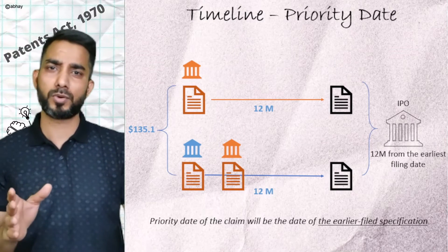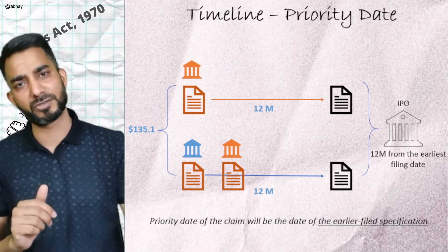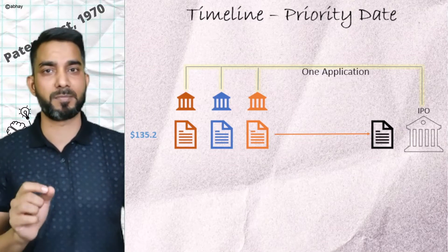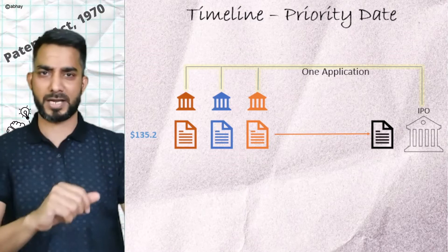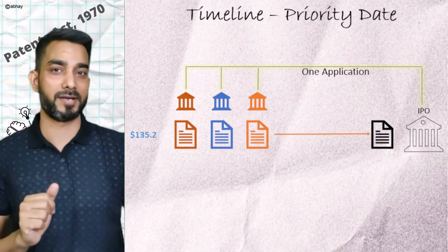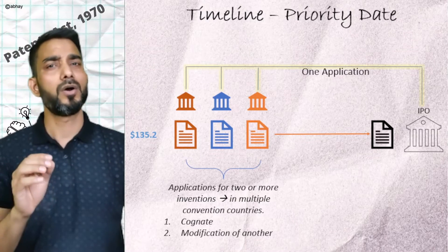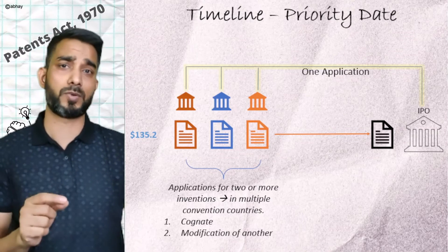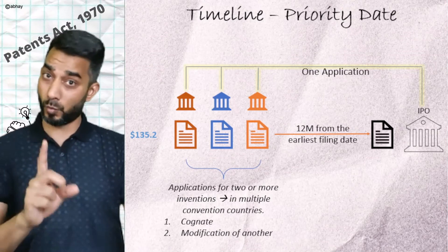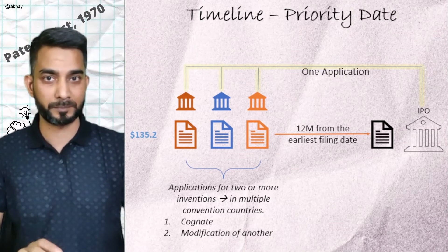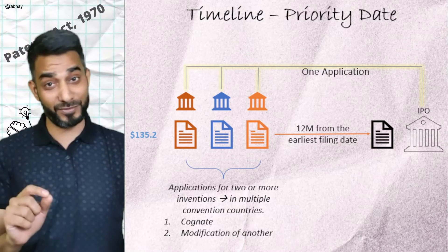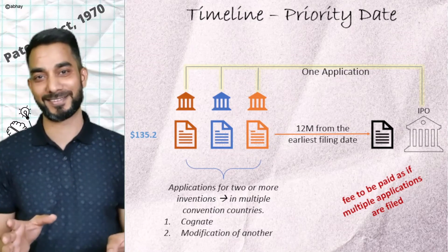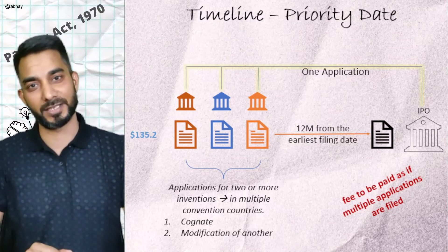What if two or more inventions were filed in two or more convention countries? In such cases, as per Section 135.2, one single convention application can be filed with the Indian Patent Office claiming priority from these multiple filings, provided such inventions are cognate or modifications of one another — basically similar or the same inventions. Within 12 months from the earliest filing date, one combined application can be filed. Fun fact: the fee charged by the Indian Patent Office would be as if multiple applications were filed.